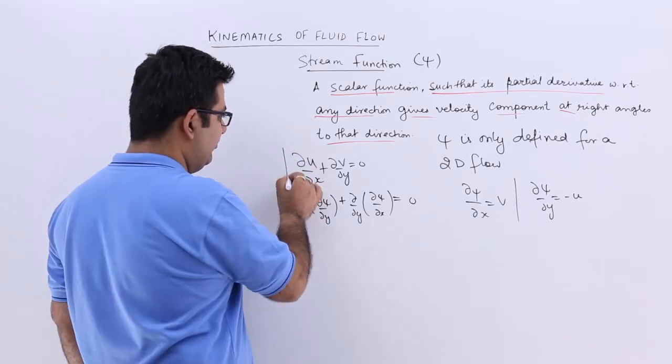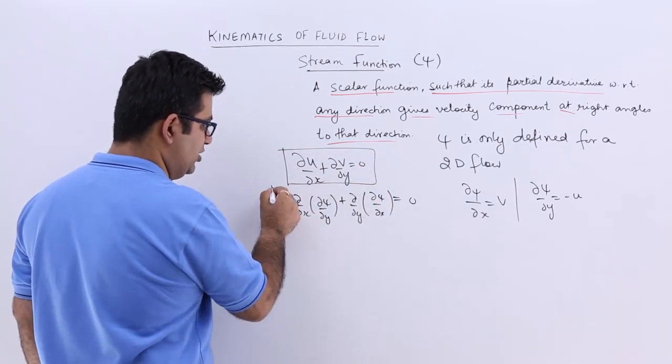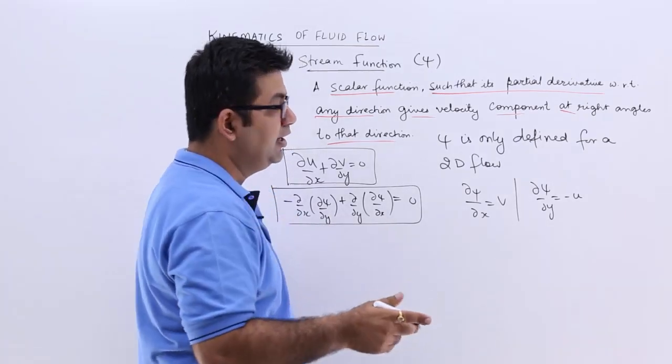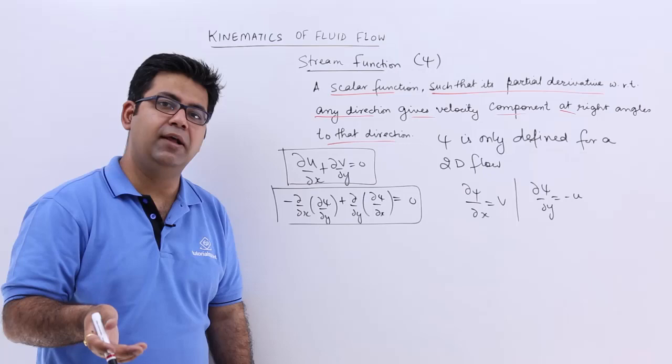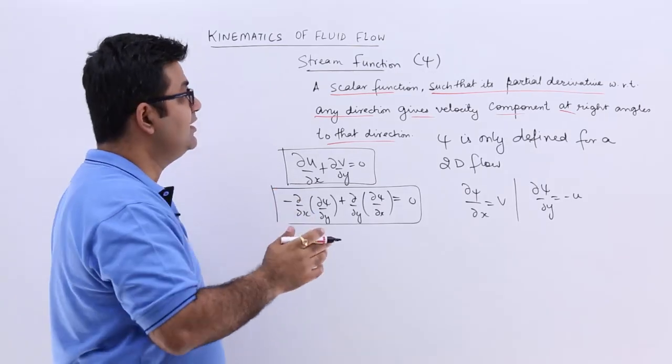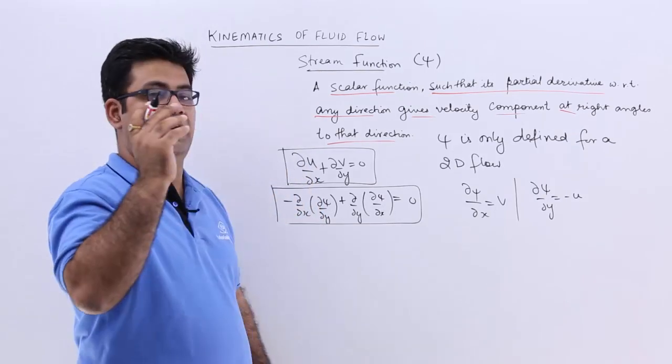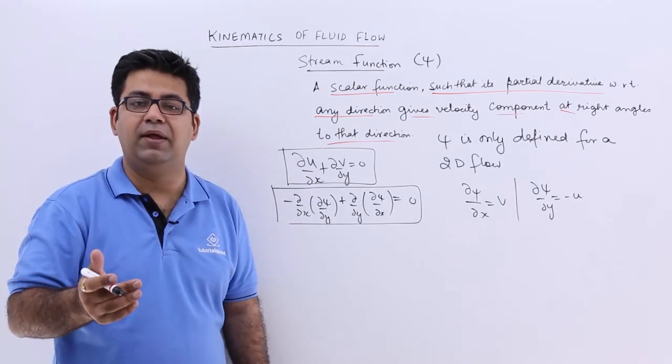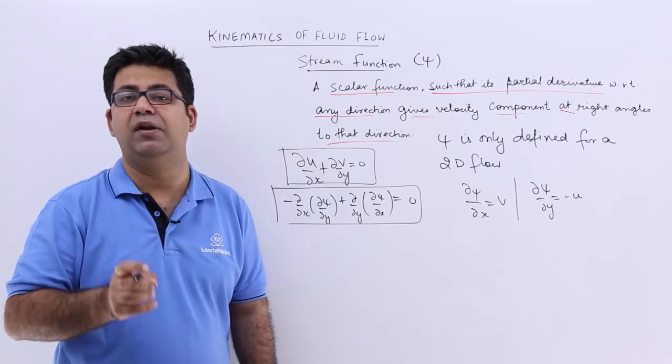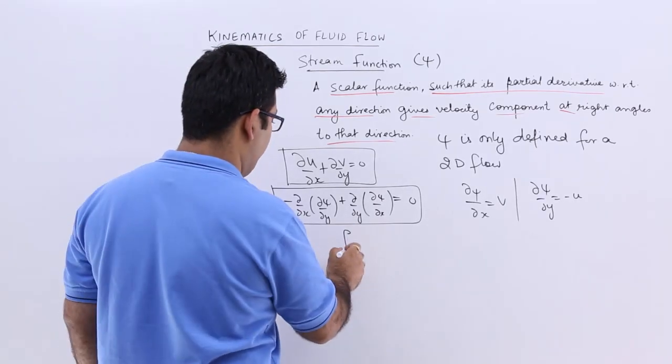This means that if your stream function is existing, then your flow might be rotational or it might be irrotational. So the existence of a stream function does not tell us about a flow being irrotational or rotational, but it tells us that there is a possible case of a fluid flow.